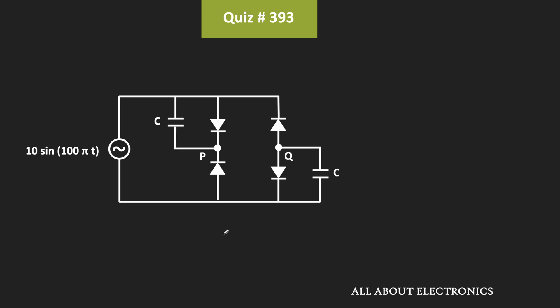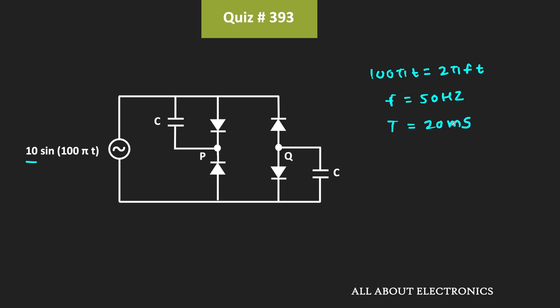The input signal is a sinusoidal signal with a peak value of 10V. Comparing 100πt with 2πft, the frequency of oscillation is equal to 50 Hz, which means the time period T is equal to 20 milliseconds. That means each cycle repeats after 20 milliseconds, so we need to find VPQ at 60 milliseconds — equivalently, after three cycles.